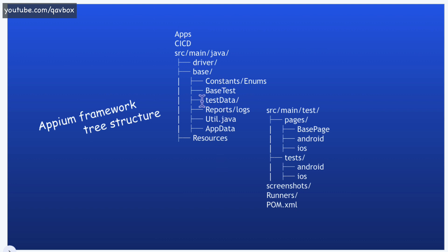You can categorize files accordingly — if it is related to the app, create an apps folder and keep all applications inside. For Excel sheet handling, you can create a new package called test data or excel_test_data. These components are not related to your actual business flow; they support running or creating test cases. This is all under source/main/java and remains the same regardless of the application you're dealing with or the type of tests you are generating.